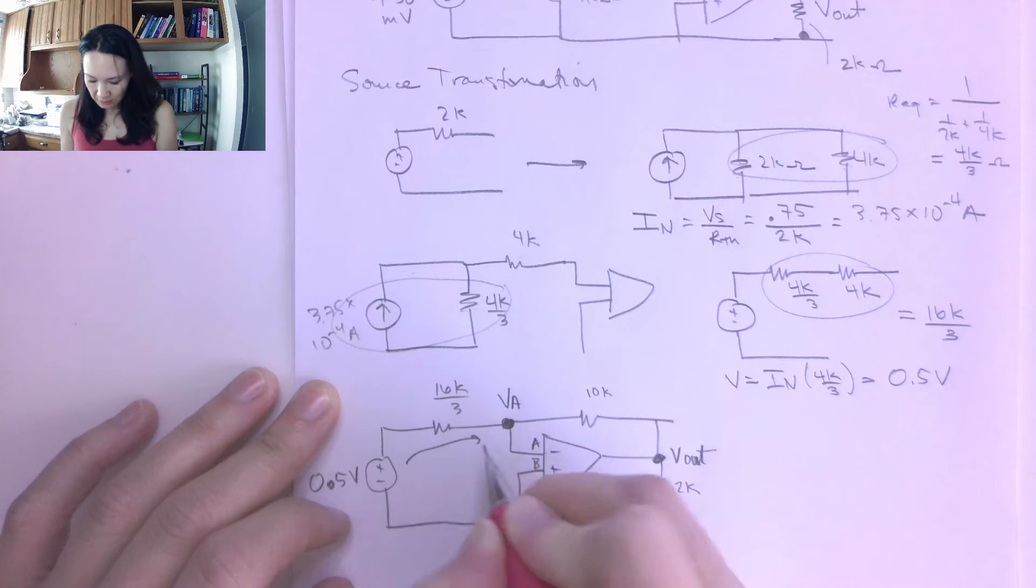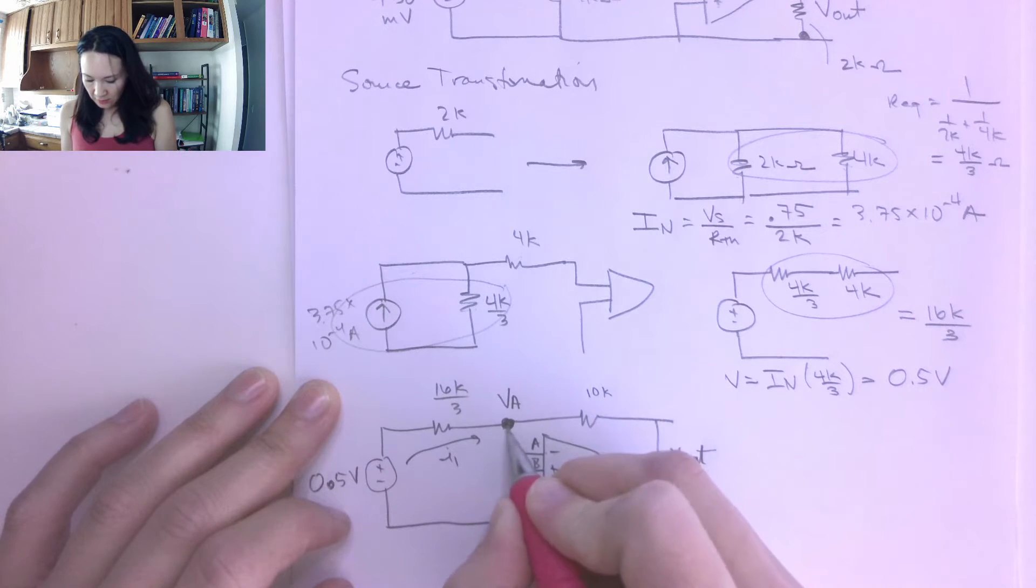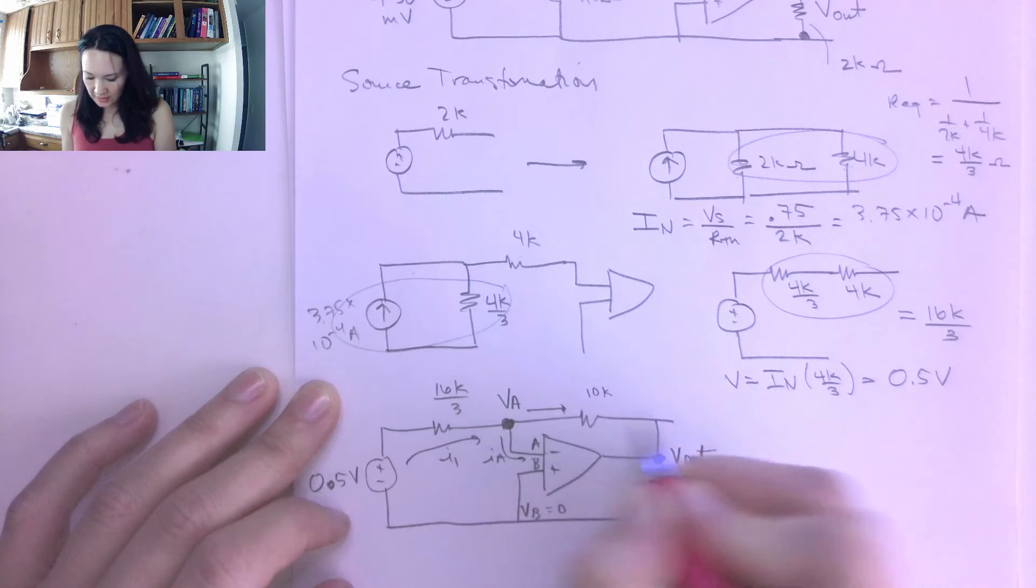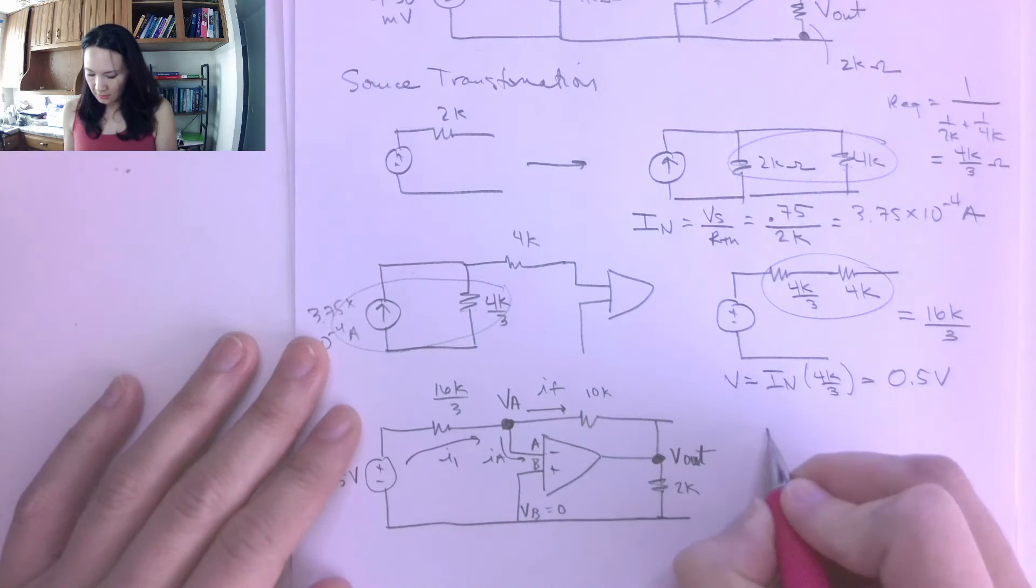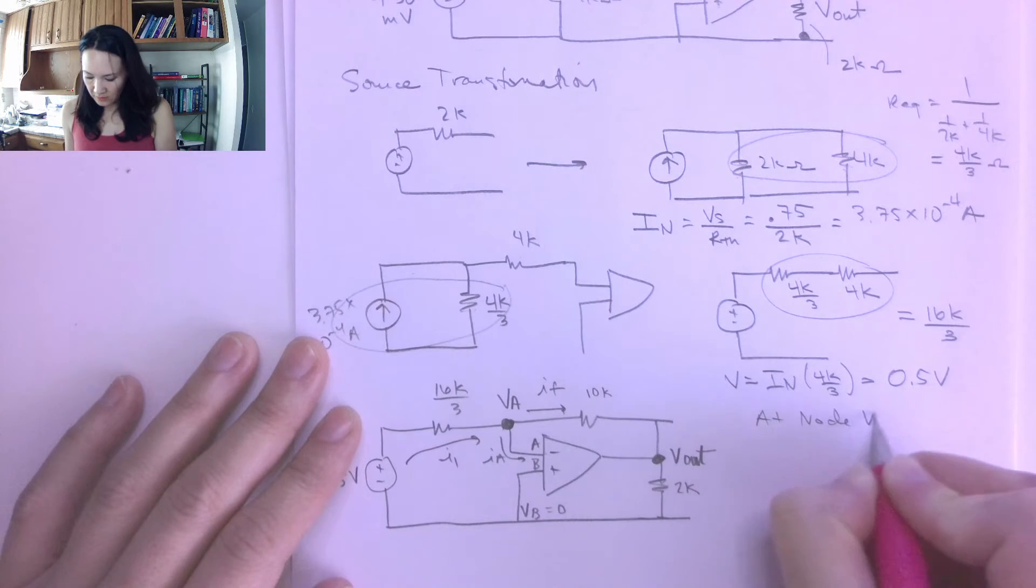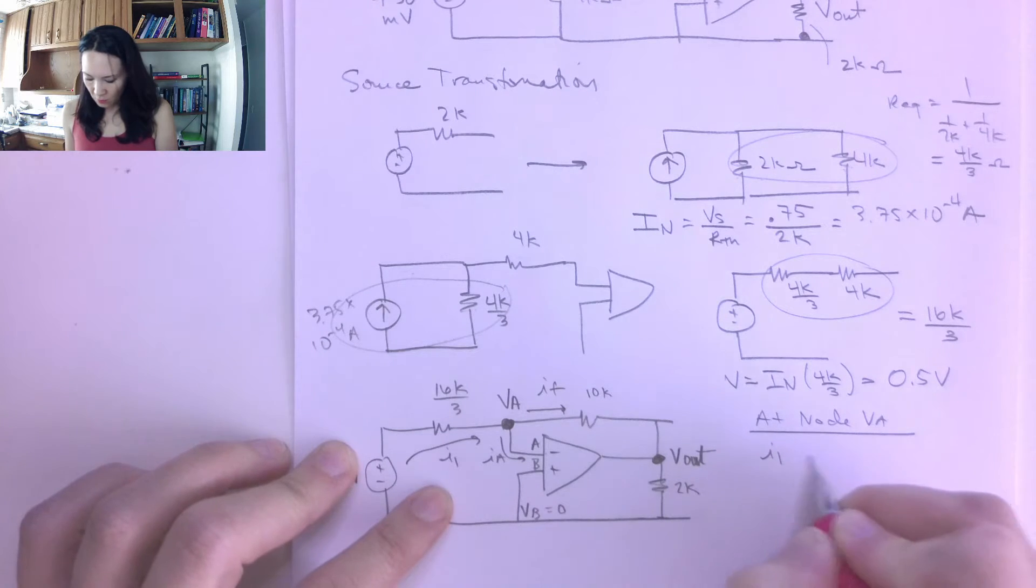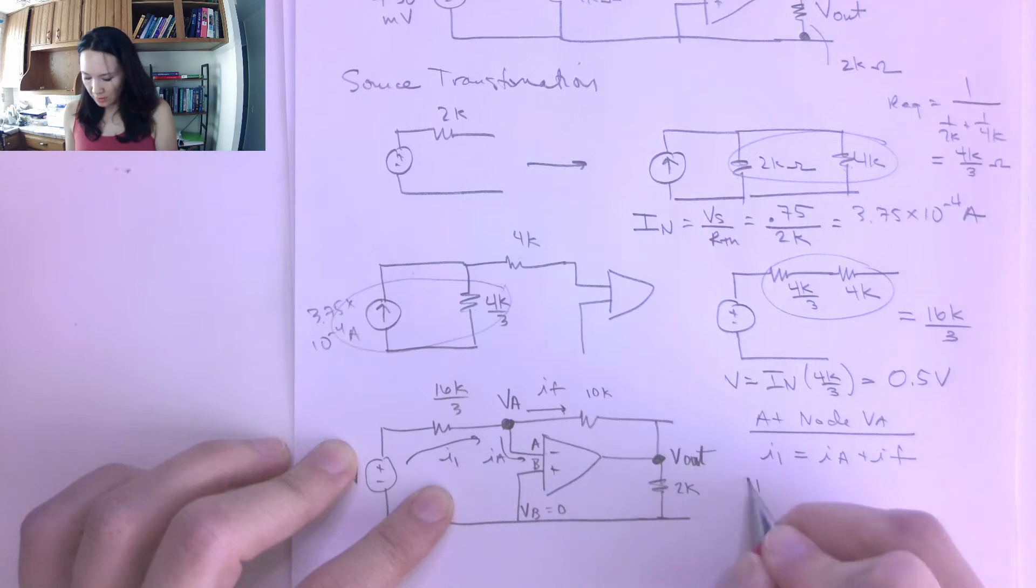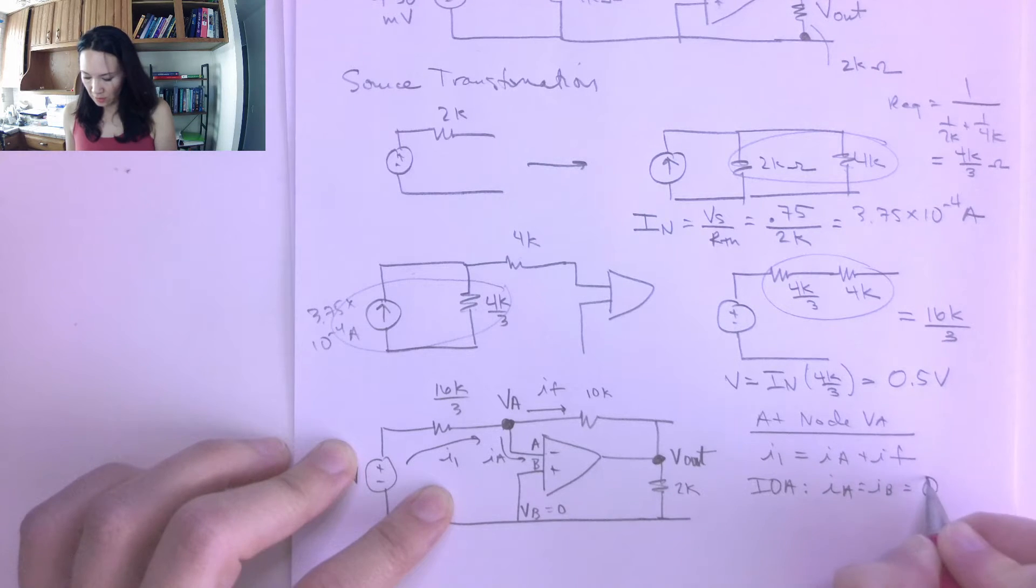At this point, I can put in my currents. I'll call this I1. And then I1 goes into this node, and can split down this way into IA, or take the feedback loop IF. So then, at node VA, my equation is I1 comes in, and by KCL that splits into IA plus IF. But remember, because of the ideal op amp approximation, ideal op amp approximation tells us that IA is equal to IB is equal to 0. So this thing goes away. Therefore, I have I1 is equal to IF, so same as in the previous video.